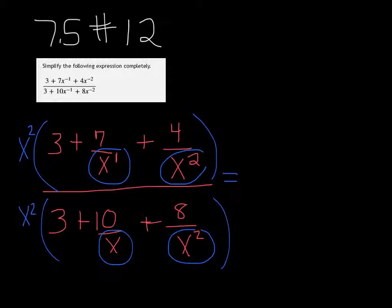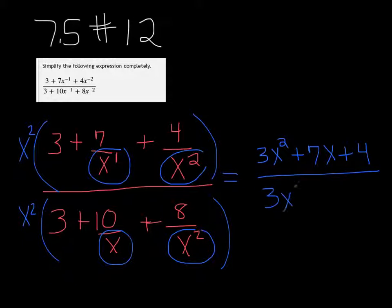So distribute the x squared through. We get 3x squared plus 7x plus 4 over 3x squared plus 10x plus 8.